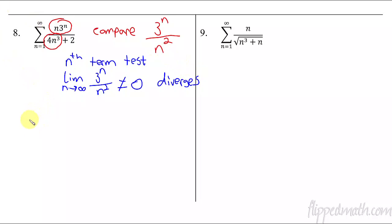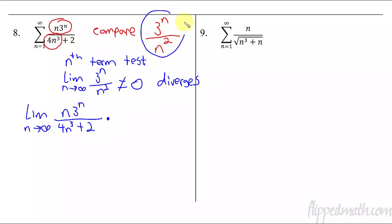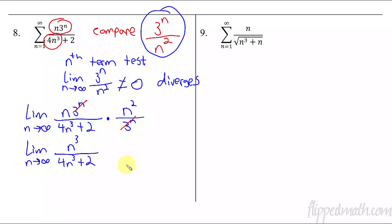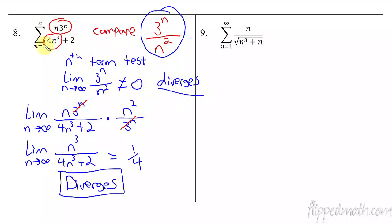So now we can use the limit comparison: set up the original series and multiply by the reciprocal of 3^n over n², which is n² over 3^n. The 3^n terms cancel, and we end up with n³ on top and 4n³ + 2 on bottom, which equals 1/4. We have a finite positive answer. Therefore, both series do the same thing — they both diverge. So this series diverges.